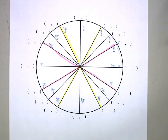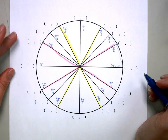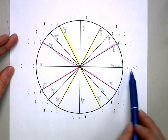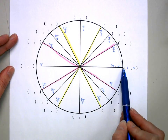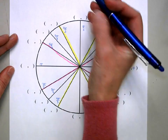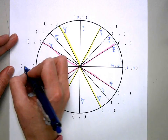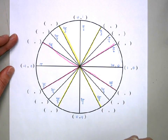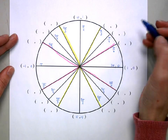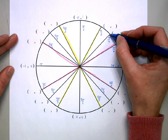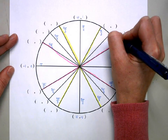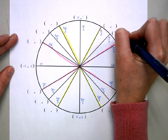Through right triangle trig we can figure out the coordinates. For the quadrantals, since the radius is 1 and centered at the origin: (1, 0), (0, 1), (−1, 0), (0, −1). Through right triangle trig, the coordinates for the π/4 positions are (√2/2, √2/2).